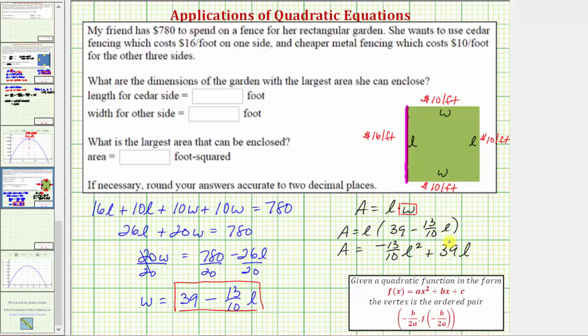From here, we need to recognize that we have a quadratic equation or quadratic function. If we were to graph this function, the shape would be a parabola. Because the coefficient of the squared term is negative, the parabola opens down. Therefore, to maximize the area, we need to find the vertex of the parabola.